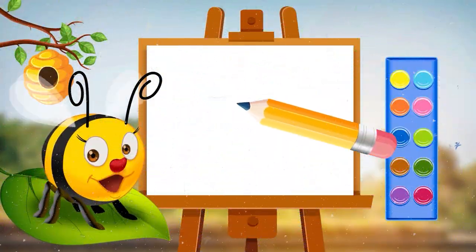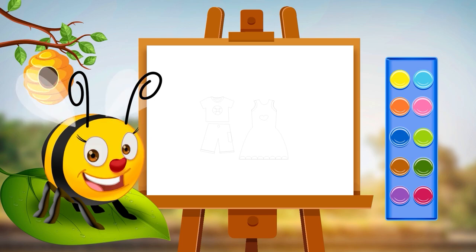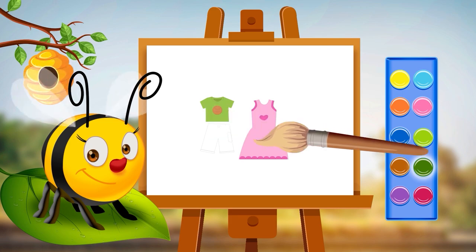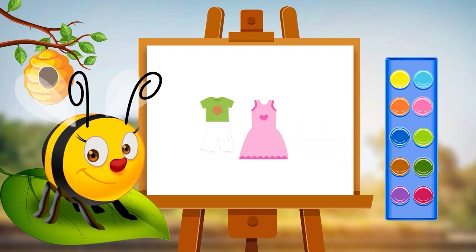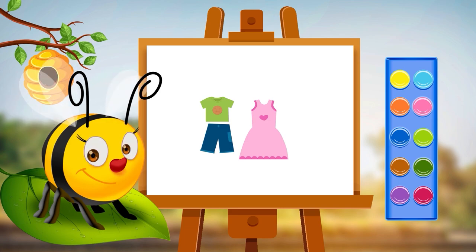Let's find out what picture we're going to color today. It's clothing! Help me choose the pretty colors for this drawing. What color should we paint this beautiful looking dress? So pretty! Now the boys' outfit — first the shirt. That's great! Now the pants. It turned out really nice. Now they're ready to go out. It turned out really great.